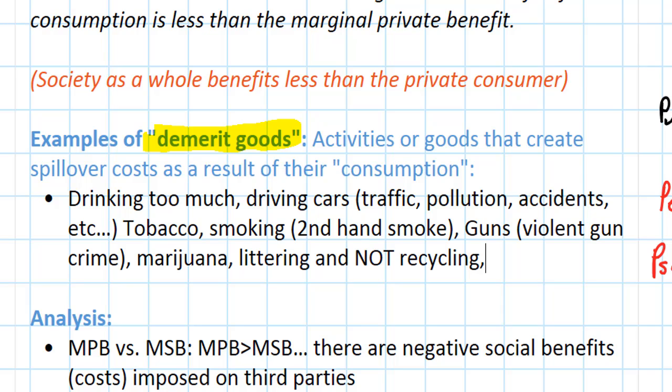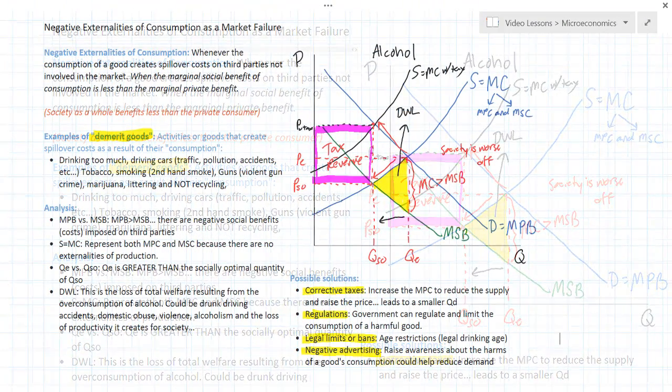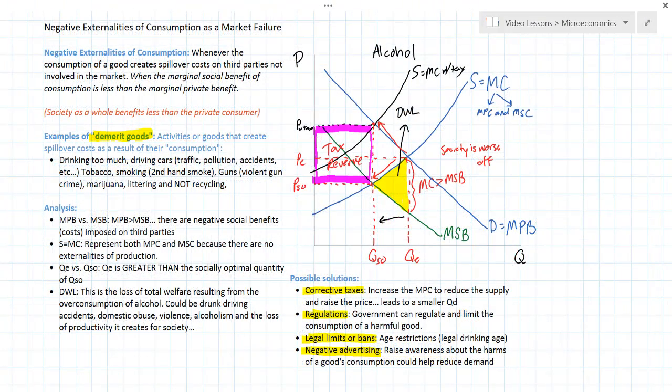There are many other activities that could add to this list. Anytime a good's consumption creates negative consequences for people not involved in that good's consumption, it is considered a demerit good. There is a negative externality of consumption. As we've shown in this lesson, a negative consumption externality can be illustrated by showing the social benefit line below or inside the private benefit. There are negative social benefits, or costs imposed on society as a whole.